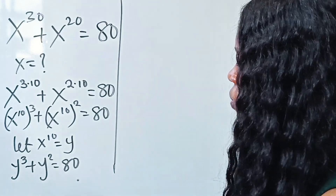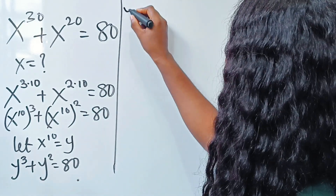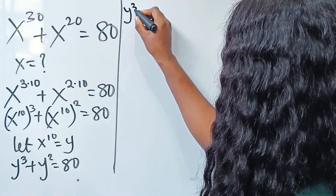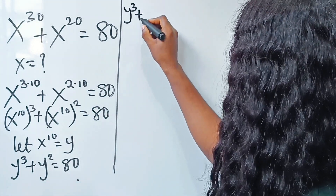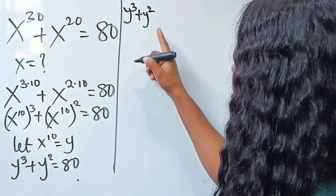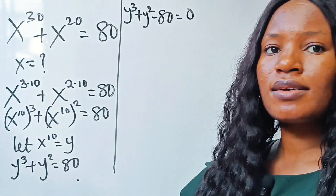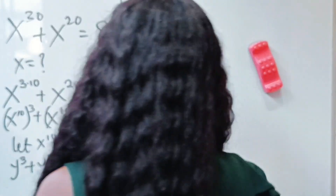So we now have a cubic polynomial. Let's write it properly: y to the power of 3 plus y squared minus 80 is equal to 0.